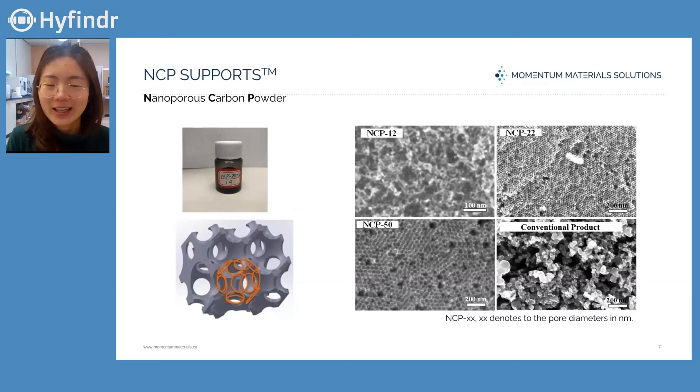Are all four images from your catalyst carrier material? The first three are ours and the last one is a comparison — the conventional product. You can tell the difference because the nanoporous carbon powders have a monodispersed pore structure, while the conventional product is kind of an agglomerated structure with solid spherical carbons grouped together.